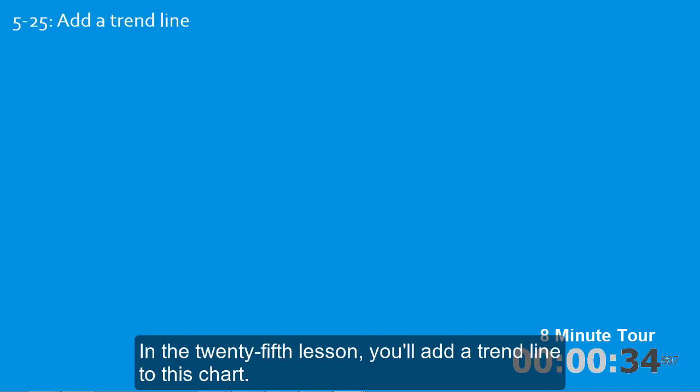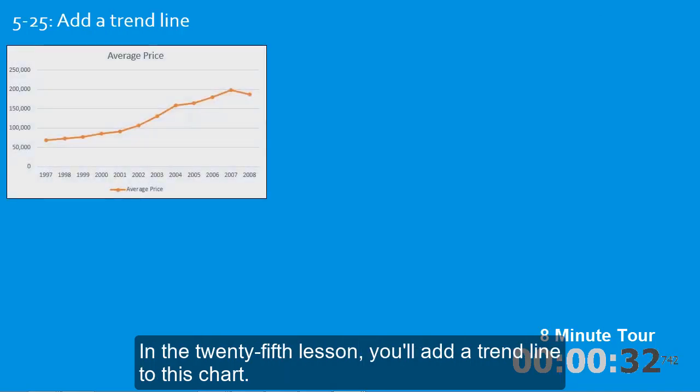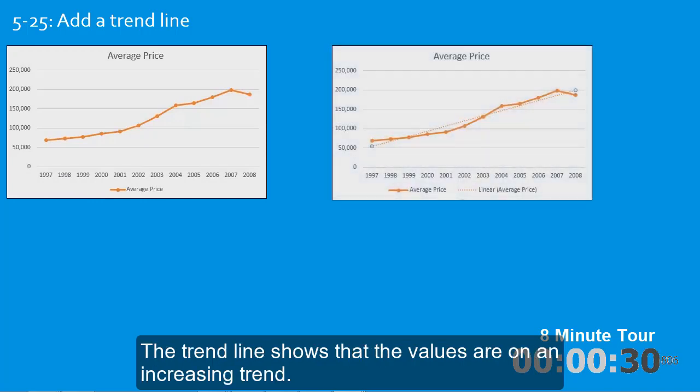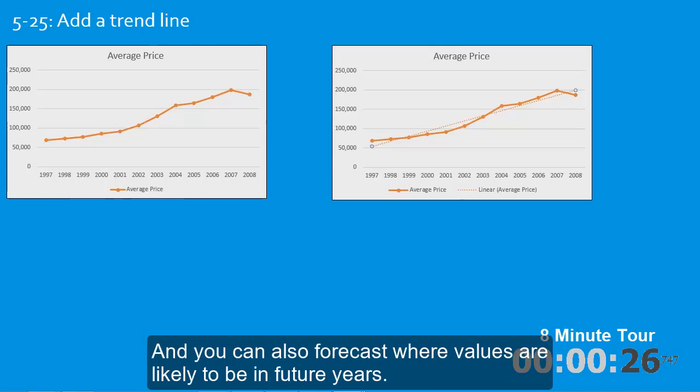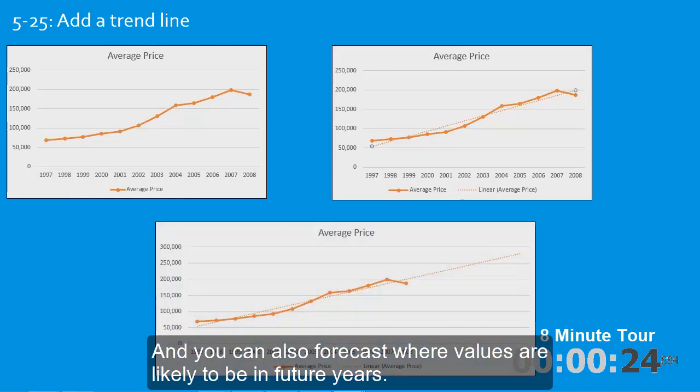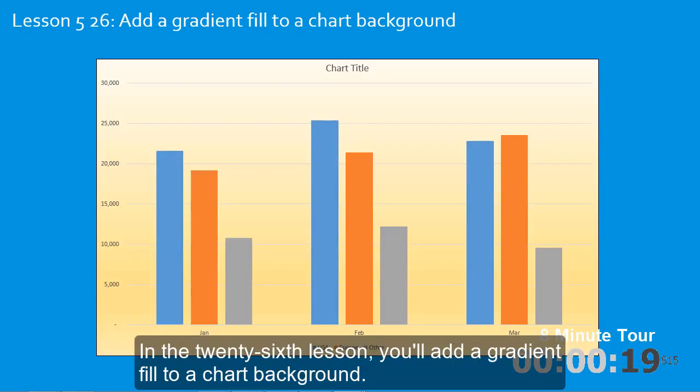In the twenty-fifth lesson you'll add a trend line to this chart. The trend line shows that the values are on an increasing trend, and you can also forecast where values are likely to be in future years.